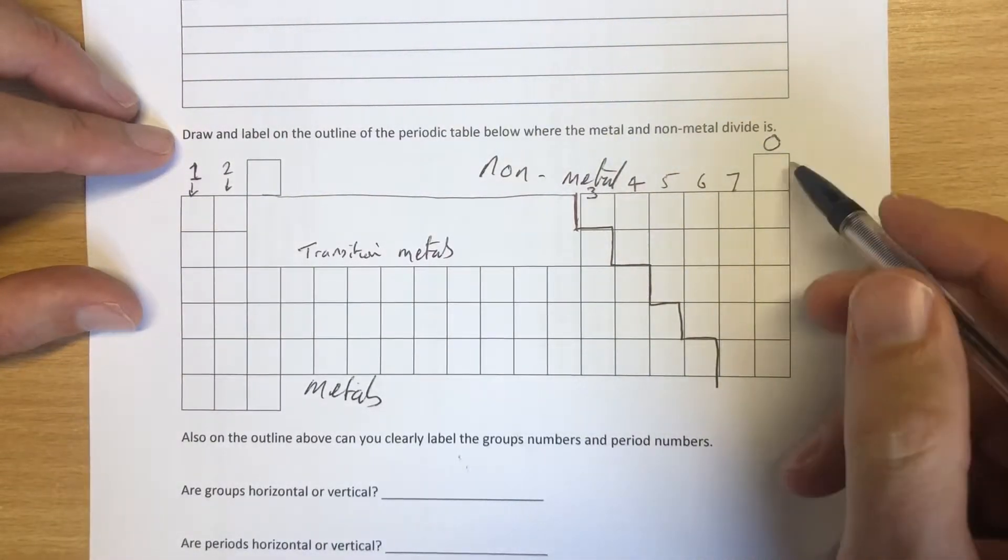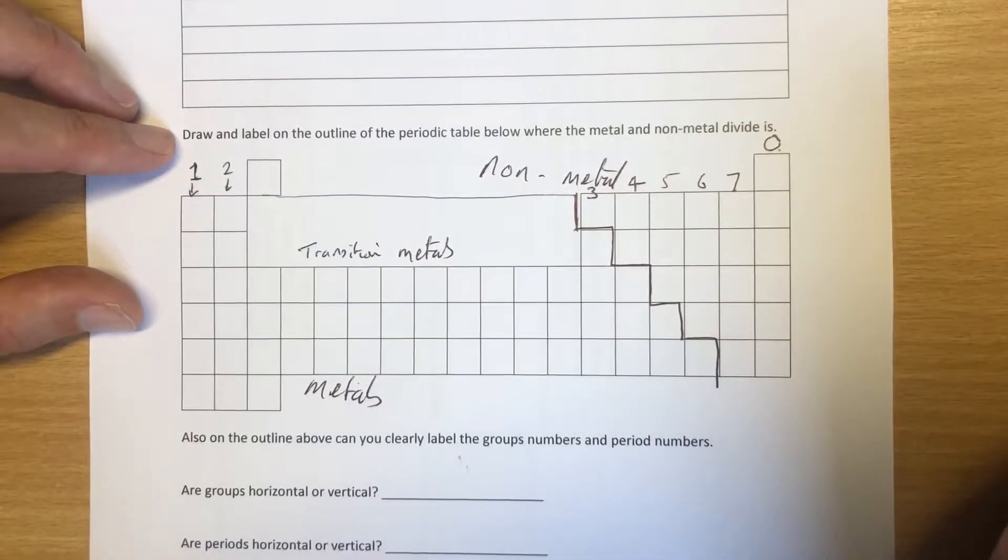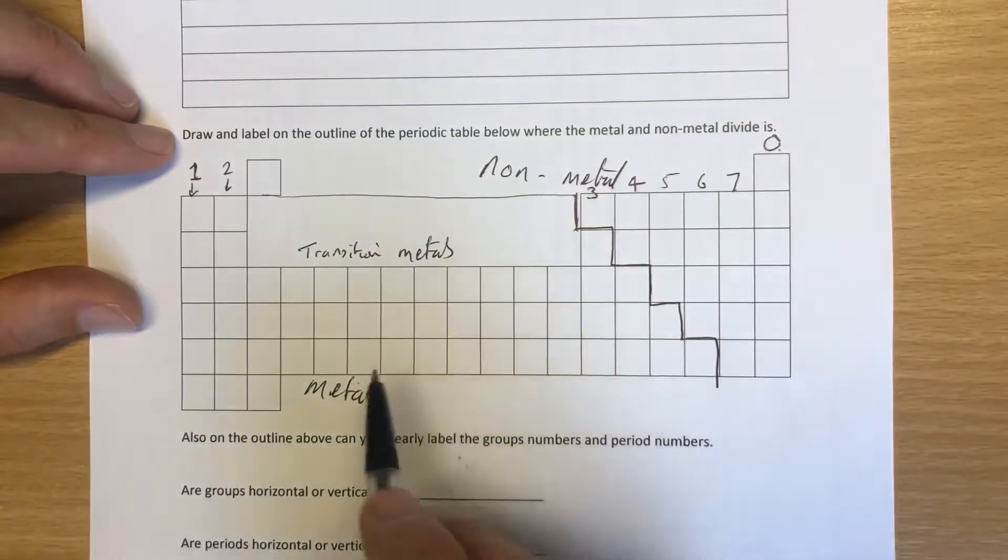I call it group zero because the elements in this group react with absolutely nothing. That's quite a nice way of remembering it. So there are the group numbers.